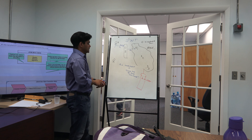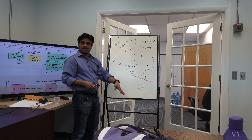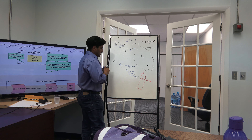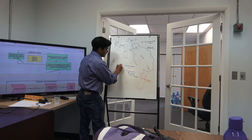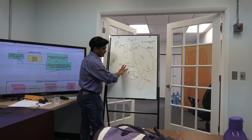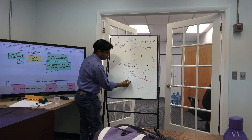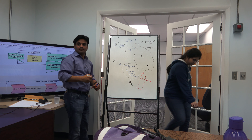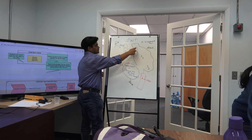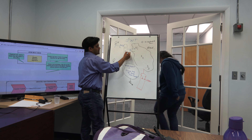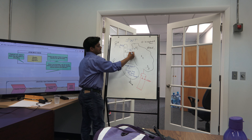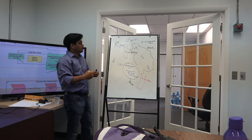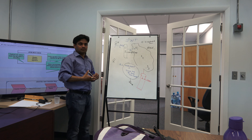Server 1 takes the user JSON plus the secret key for the production environment — let's say 'ABC-secret' — and digitally signs it to create JWT A. Server 1 then returns the response along with JWT A to client A.